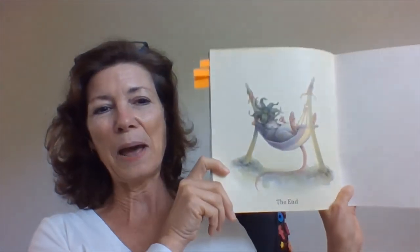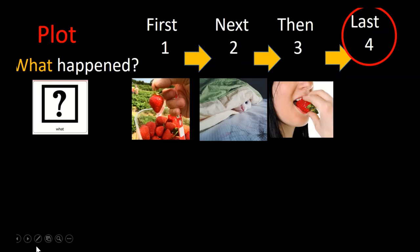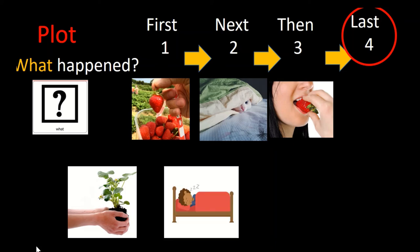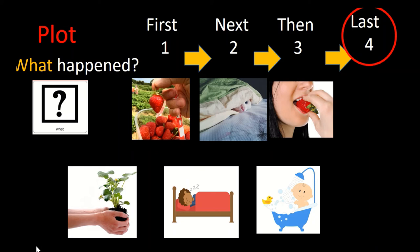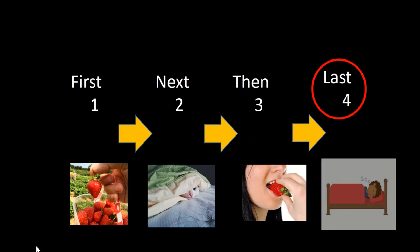And the last thing that happened was he was very happy because the bear did not get his strawberry. He kept the strawberry, ate it, and was so full he had to take a nap. What happened last? Did he like the strawberry so much he wanted to plant some more? Did he go take a nap because he was full and happy? Or did he go inside to take a bath because he was dirty from playing outside? Did you say he took a nap because he was so full and happy? You are right.